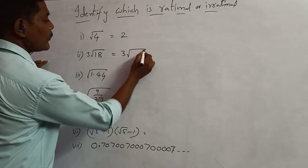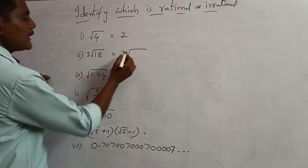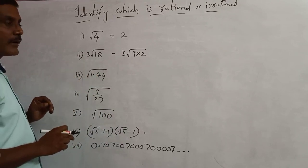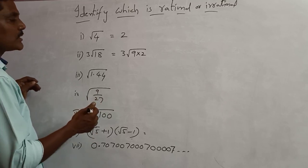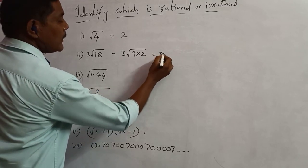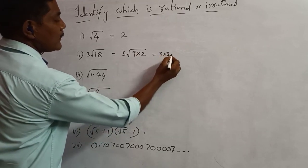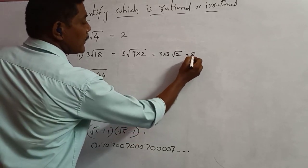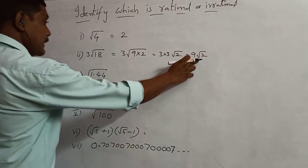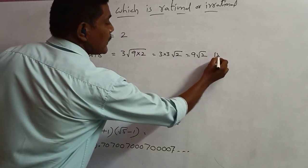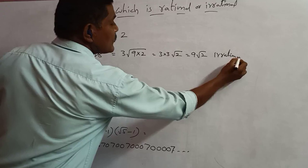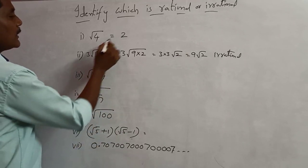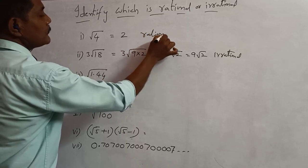So write 3 times root 18. We factorize 18 as 9 times 2, because the square root of 9 is 3. So write the factors of 18 as 9 times 2. We know the square root of 9 is 3, so we write 3 here. We don't know the square root of 2, so we put root 2. This gives 3 times 3 times root 2 equals 9 root 2. Since it contains root 2, therefore this is irrational.